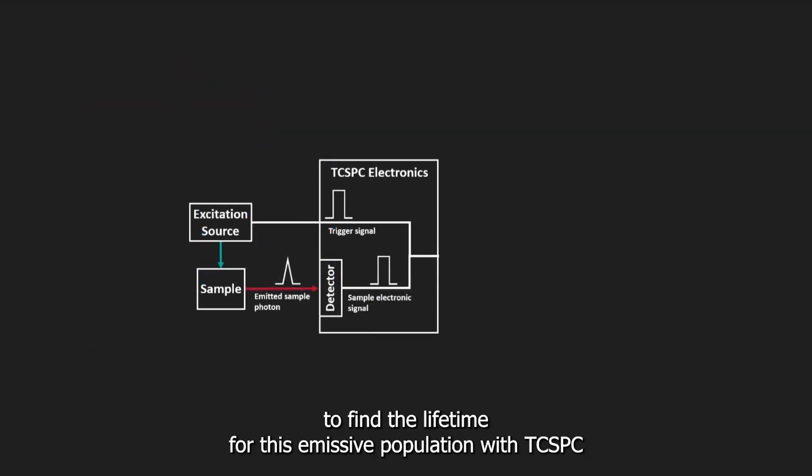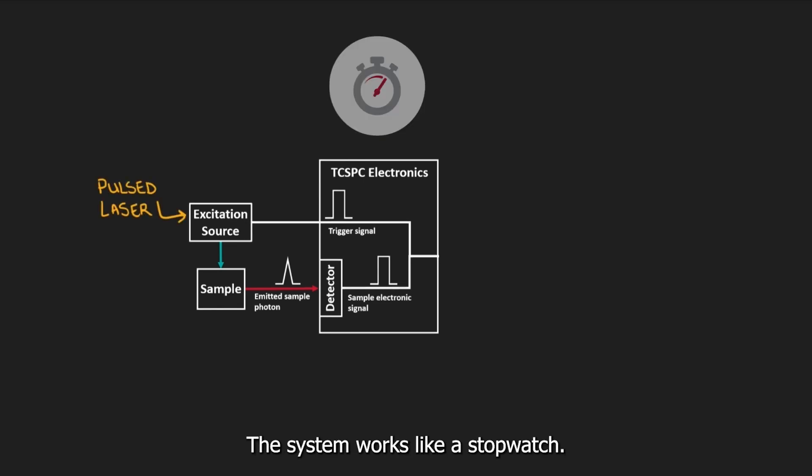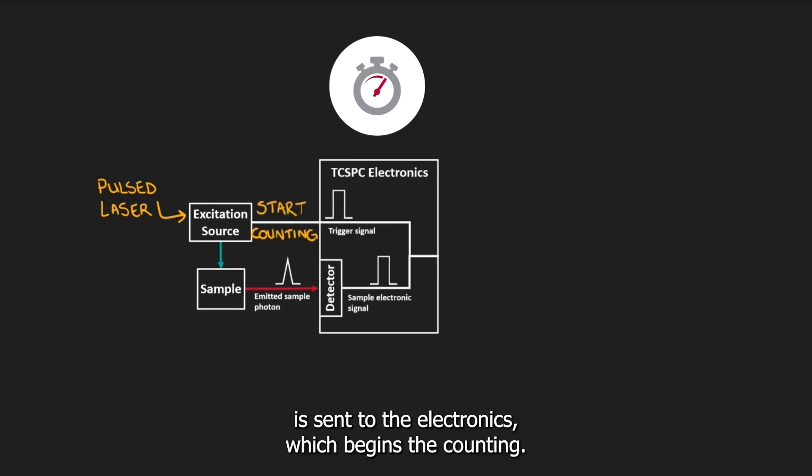To find the lifetime for this emissive population with TCSPC, we use a pulsed laser. The system works like a stopwatch. When the laser fires, a trigger-start signal is sent to the electronics, which begins the counting.